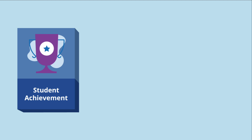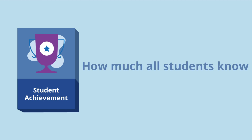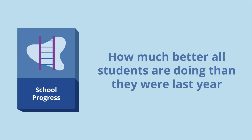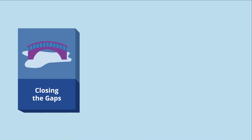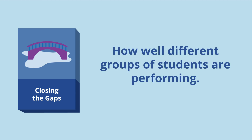Student achievement looks at how much all students know and can do. School progress looks at how much better all students are doing than they were last year, or how much better they are doing than their peers in similar schools. Finally, closing the gaps looks at how well different groups of students are performing.